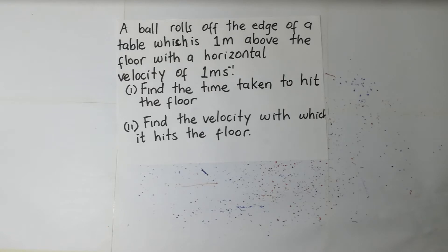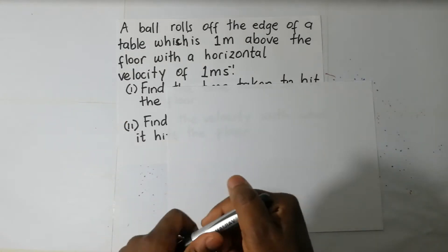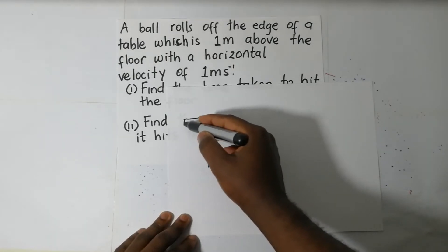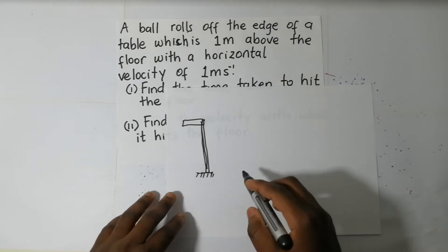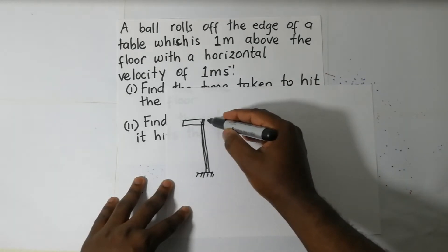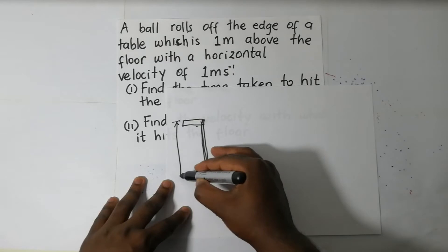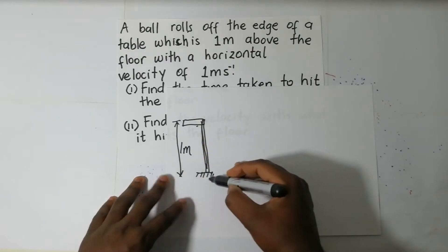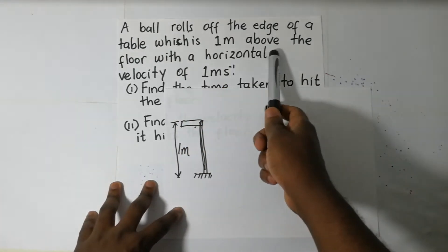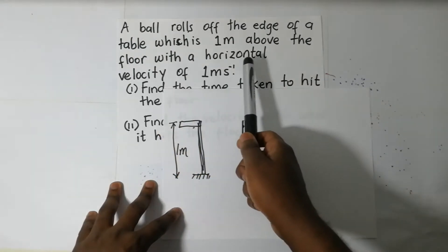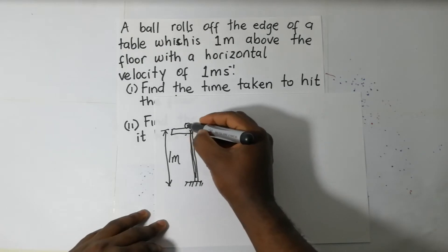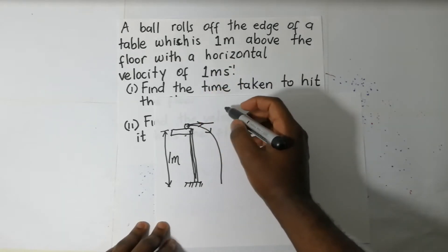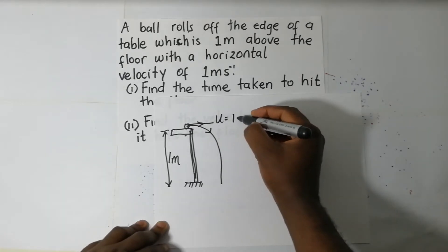Let's summarize this using a diagram. So we have a ball — it rolls off the edge of a table. This table is one meter above the floor, which is horizontal. The ball is rolling off with a horizontal velocity of one meter per second.